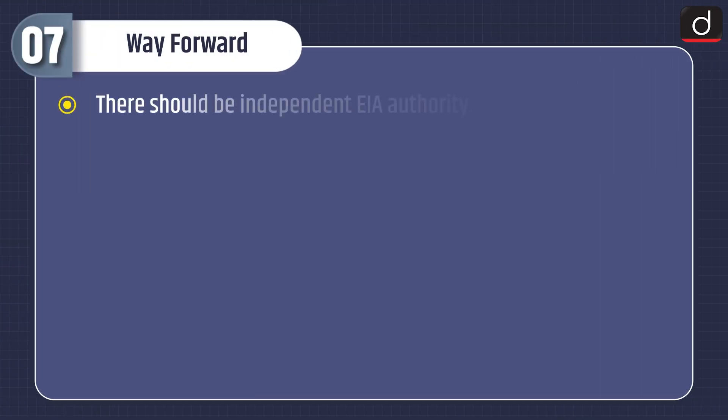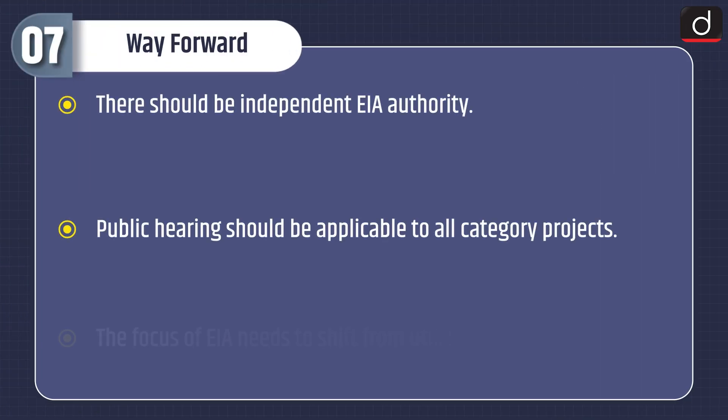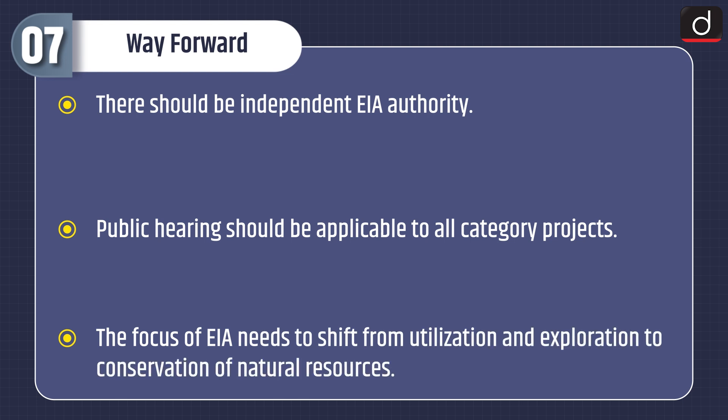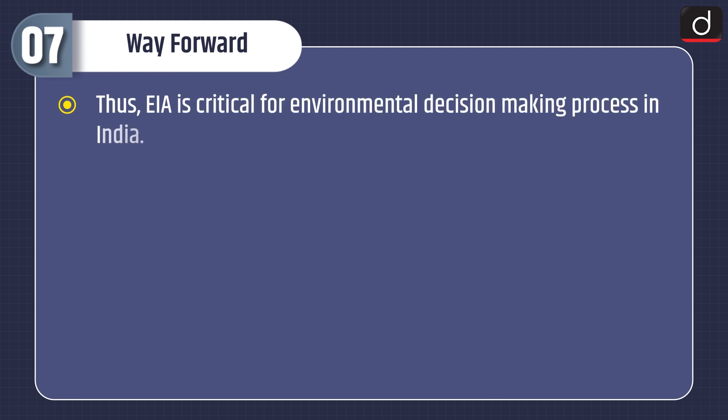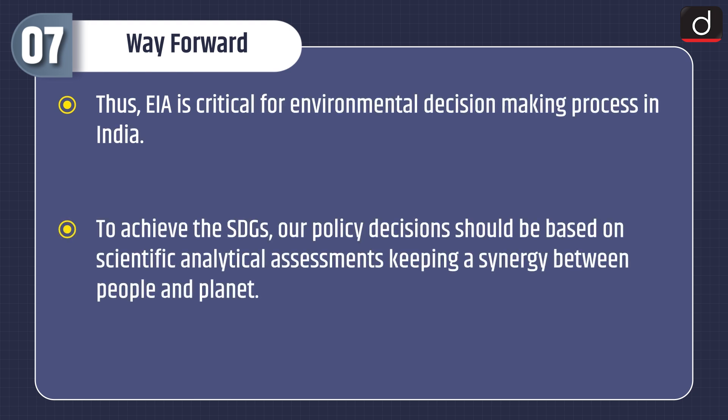Lastly, the way forward: there should be an independent EIA authority. Public hearing should be applicable to all category projects. The focus of EIA needs to shift from utilization and exploration to conservation of natural resources. EIA is critical for environmental decision-making in India. To achieve the SDGs, policy decisions should be based on scientific analytical assessments keeping a synergy between people and the planet.